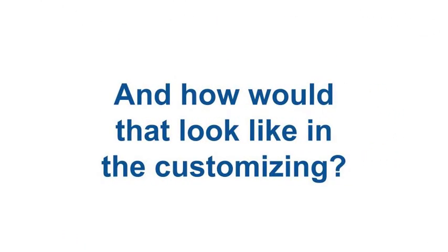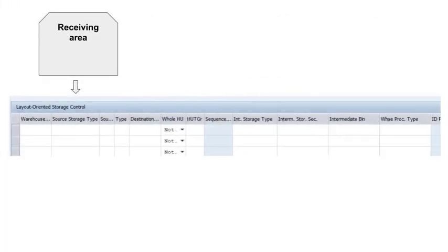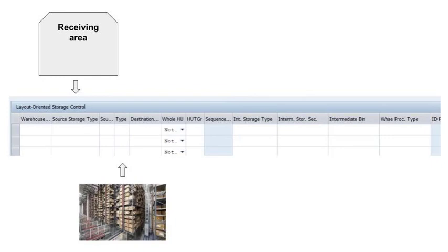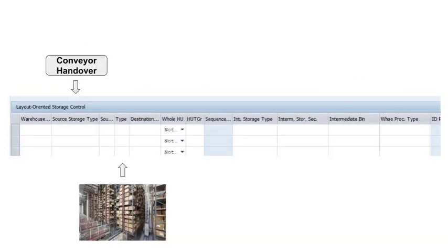Just a quick look at a sample customizing — again this is a simplified view as we are not interested in all details and possible configuration options at this point. For our example flow, we would need at least two records. The first record would have the receiving area as the source storage type and the pallet rack as the destination. The intermediate bin for this record would be the conveyor handover. The second record would have the conveyor handover as the source storage type and again the pallet rack as the destination. The intermediate bin for this record would be the ASRS handover.